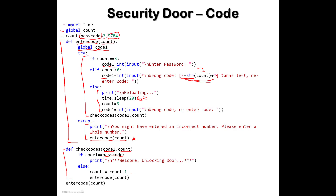Otherwise, count is set to count minus one — this is where your chances start decreasing. Then it calls 'enter_code(count)' — the same function that called it in the first place. That function expects the value of count, which started at three but is now three minus one, so two, then one, then zero.